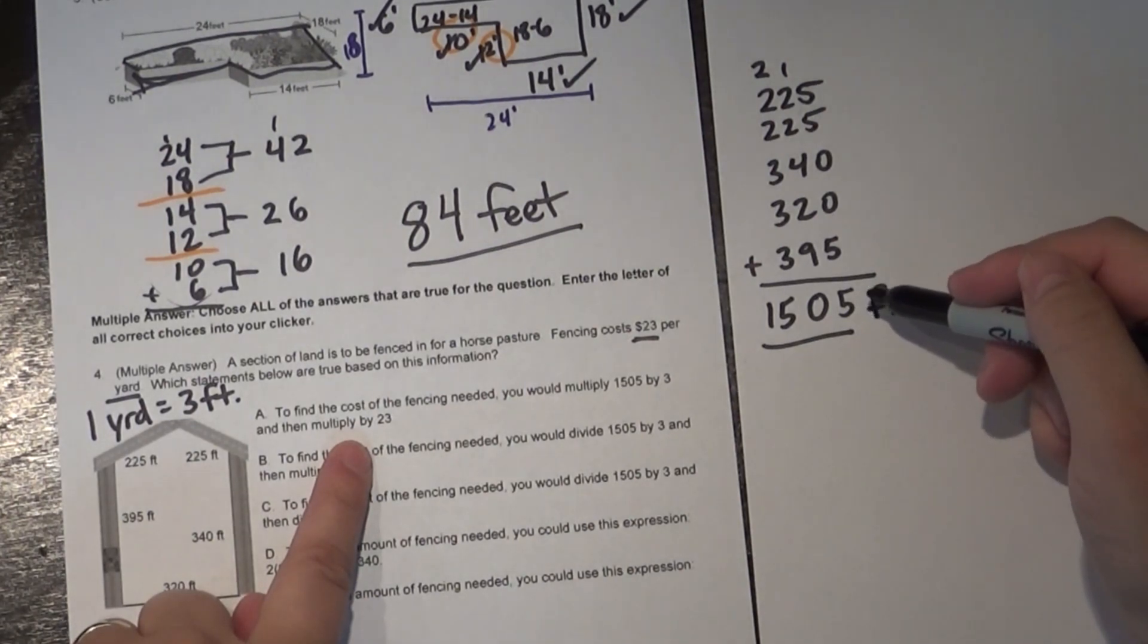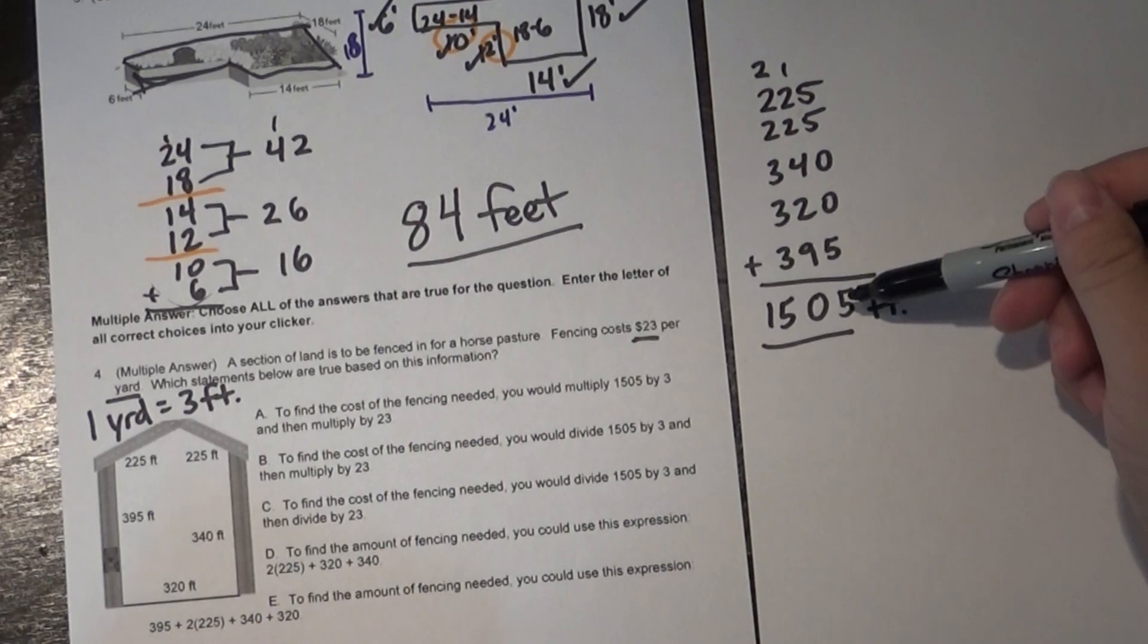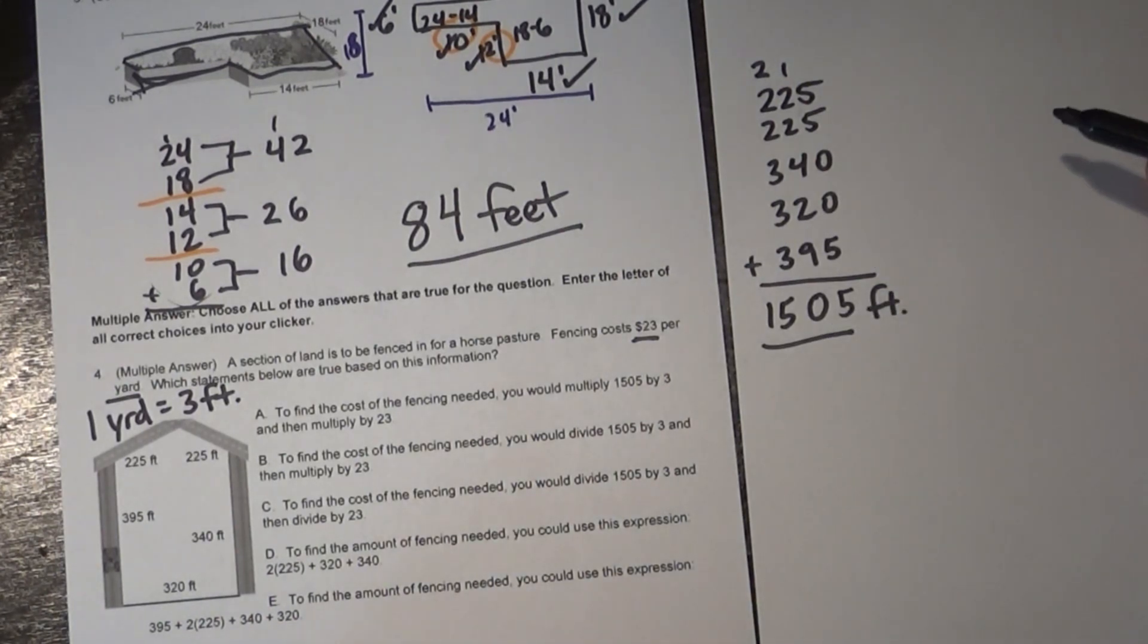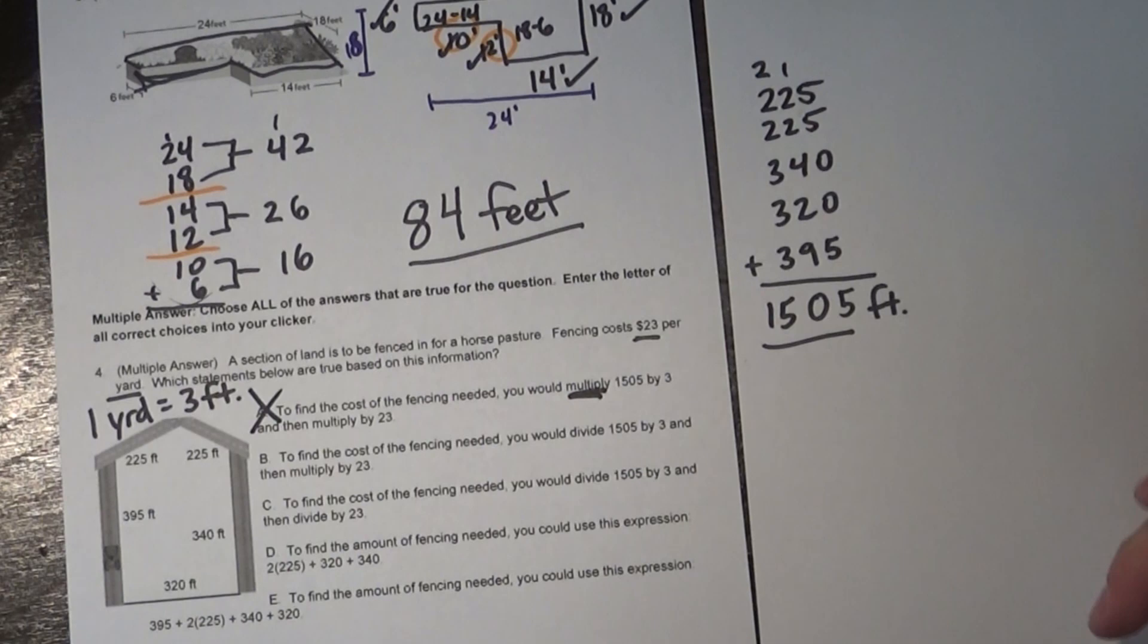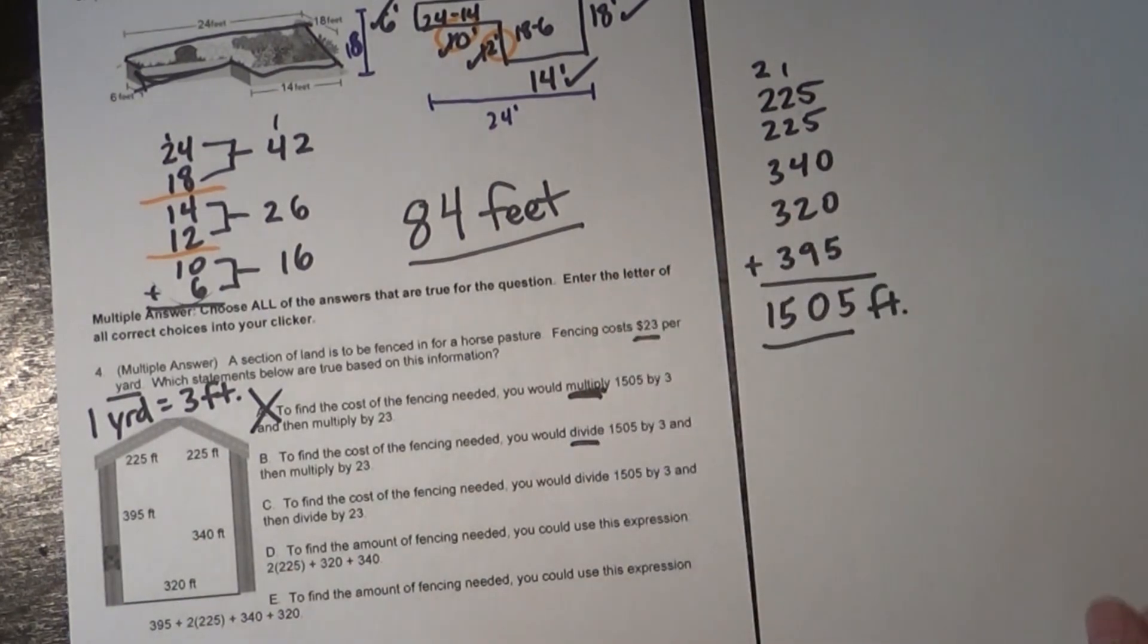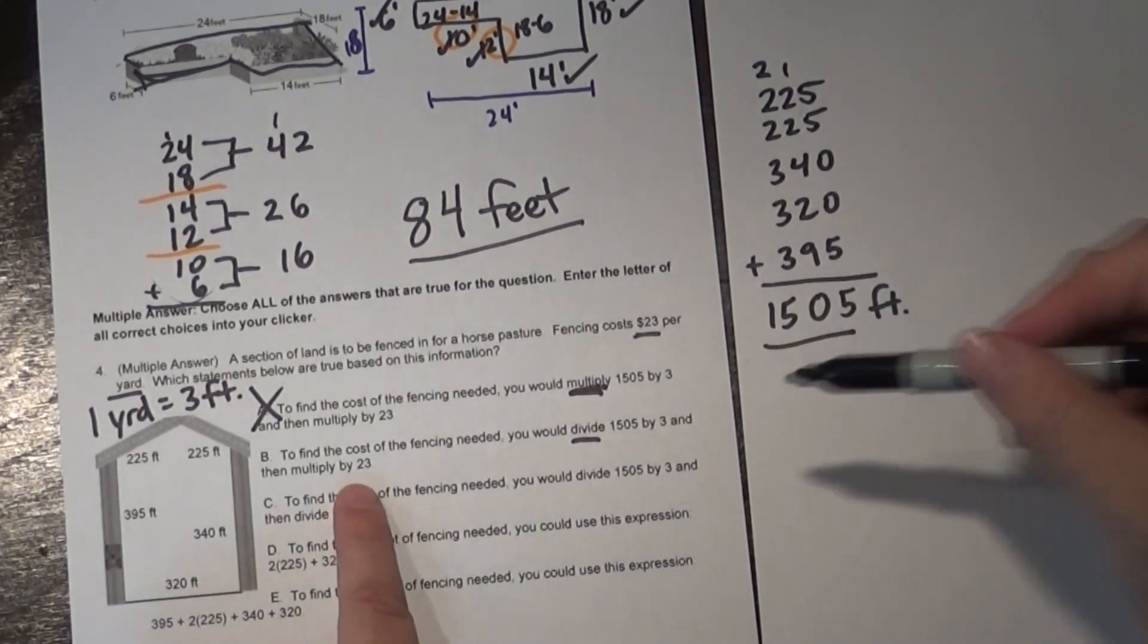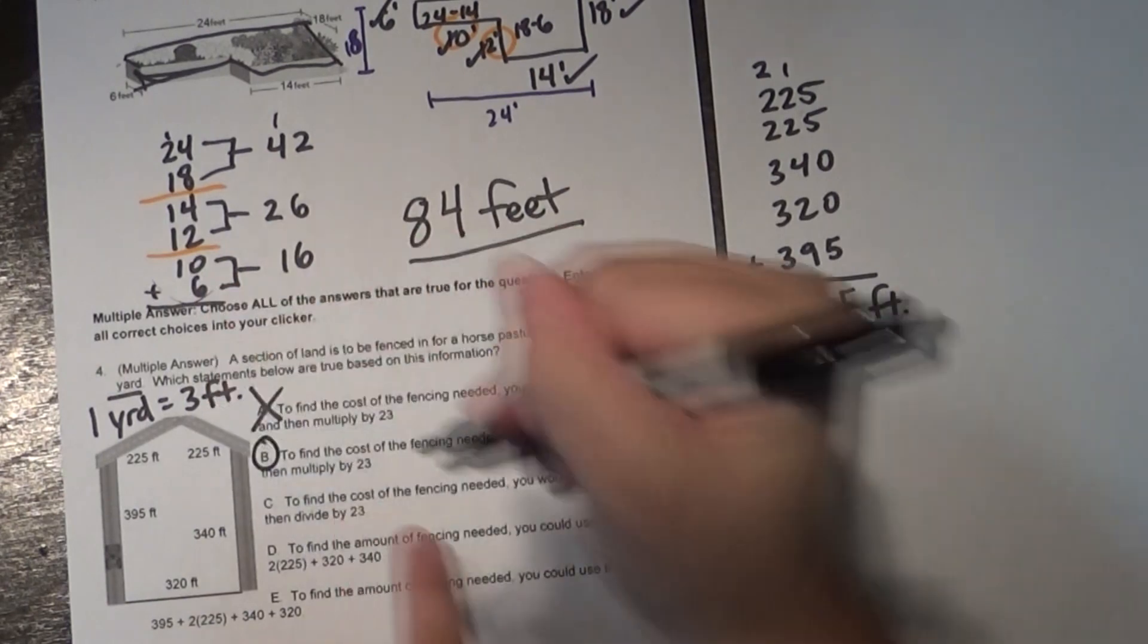Would I multiply that by three and then multiply by 23? So this is how many feet there would be. If I want to figure out how many yards there would be knowing there's one yard in three feet I would not be multiplying this. If I multiply this I'm going to get a much bigger number, and if I'm converting this to yards from feet to yards, there's going to be more feet than there are yards. Alright so I need a smaller number. So because of this word multiply letter A is not right. Instead look at B. It says to find the cost of the fencing needed you would divide 1,505 by three and then multiply by 23. Think about that for a moment. I take this divided by three that tells me how many yards I have, and then multiply by 23 because it costs $23 per yard of the fencing. So letter B is actually correct. We're dividing the feet in order to get the yards.